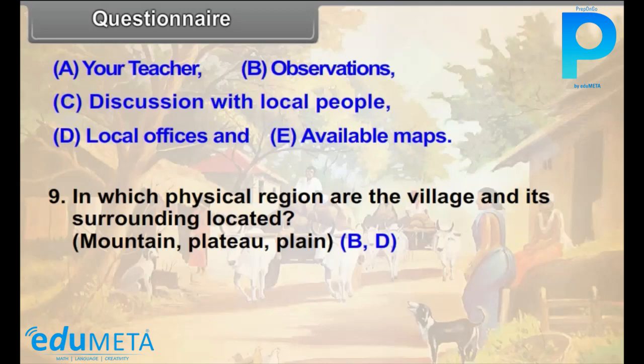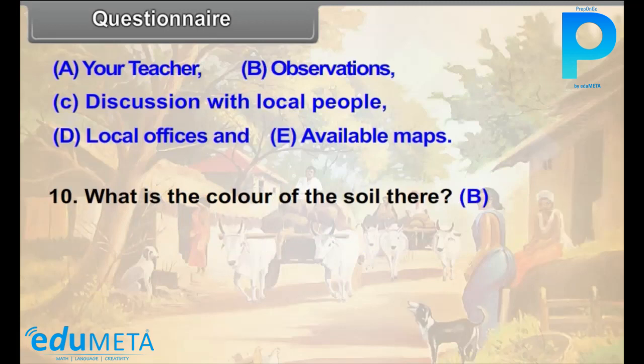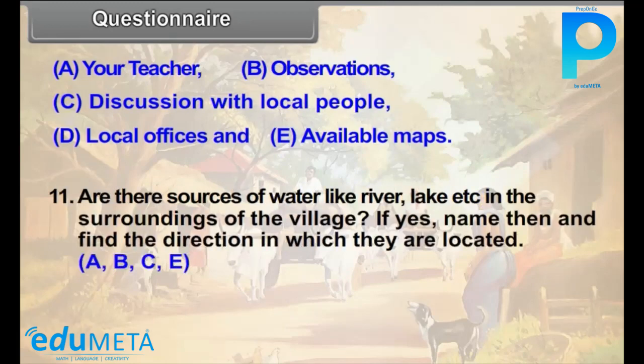Question 10: What is the color of the soil there? (B) Question 11: Are there sources of water like river, lake, etc. in the surroundings of the village? If yes, name them and find the direction in which they are located. (A, B, C, E)